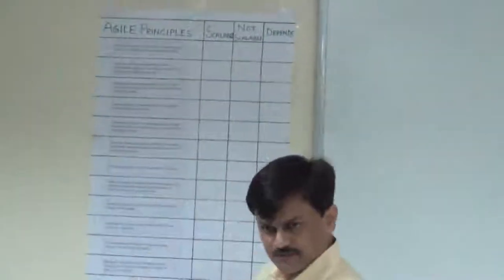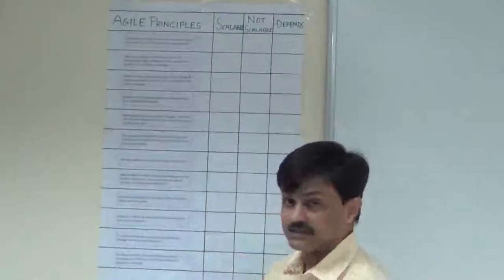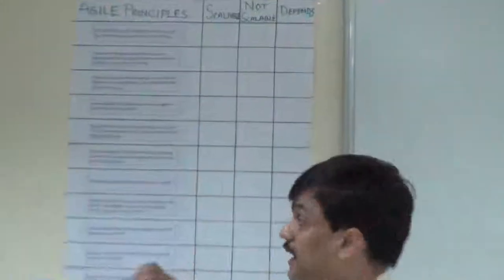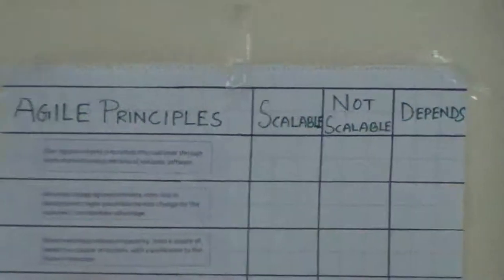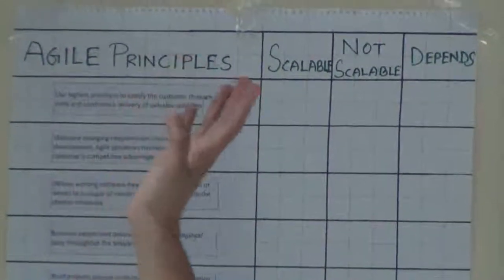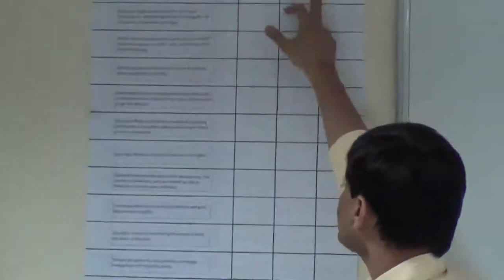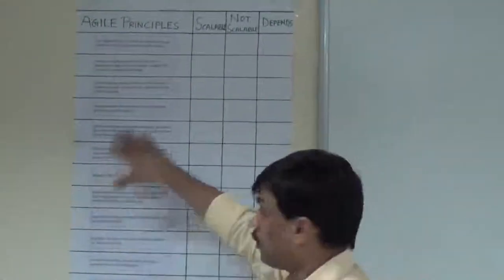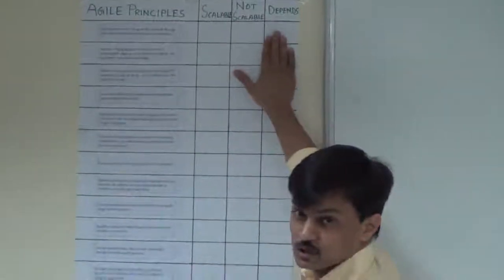So we have 12 agile principles, we can come forward, the facilitator can read about it. And we will talk about is this principle, is this approach of agile, scalable on its own. Like we can just scale it because it is something which is there. Or not at all scalable. Or we need to do something about it to make it scale.